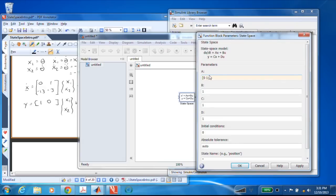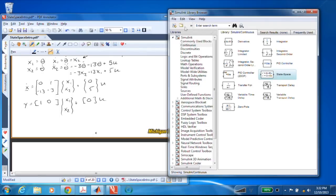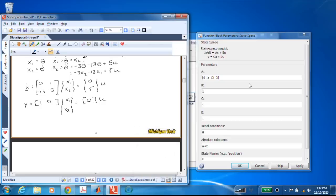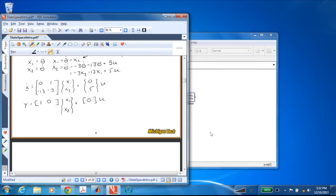So, let's see. My A is 0, 1, semicolon, negative 13, space, negative 3. And my B matrix is, what was my B matrix? 0, 5, whoops. 0, 5, and my C matrix was 1, 0, and my D matrix was just a very lonely 0. Now, initial conditions. I have two states, and so I need to specify two initial conditions. I'll just go 0, 0, and I'm done.